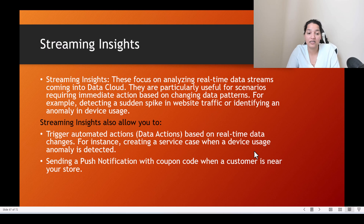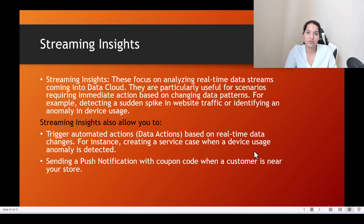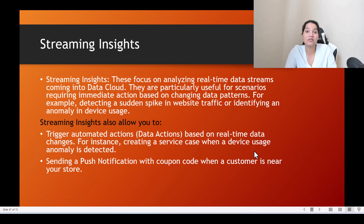A powerful example of streaming insight: you can send a push notification with a coupon code when a customer is near your store. Say a customer has the Nordstrom app installed; they're near a Nordstrom store and the app detects their location, immediately sending a push notification with a coupon code. The likelihood of that customer entering the store and buying something increases greatly — that is taking action based on real-time data.